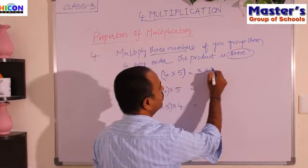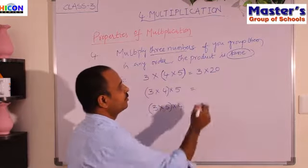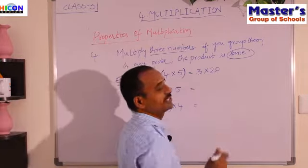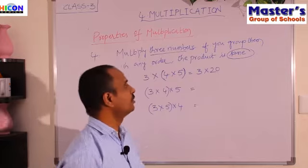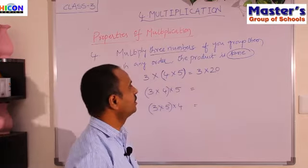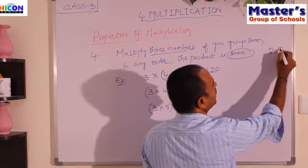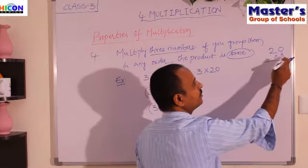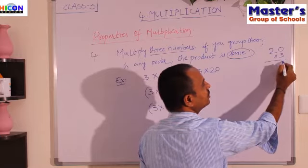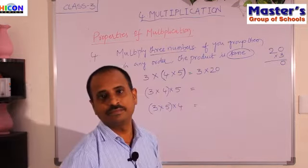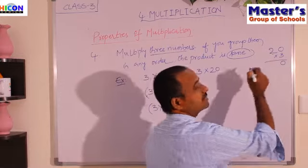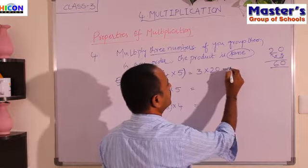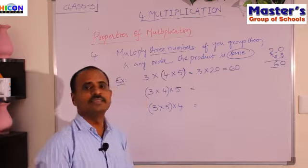For the first case, 3 × (4 × 5): first do the multiplication inside the brackets. 4 × 5 = 20. Now multiply 3 × 20. Multiply 3 with the ones place: 3 × 0 = 0. Multiply 3 with the tens place: 3 × 2 = 6. So the answer is 60.